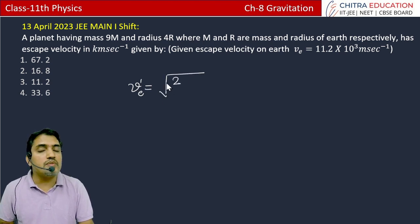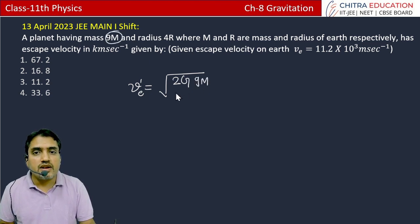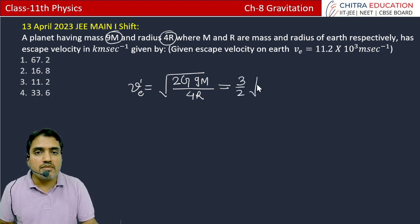And here we have 2G and its mass is 9m. 9m divided by radius, how much is its radius? 4R. If we simplify 9 and 4, then 3 by 2. And in the bracket we will get 2Gm divided by r.